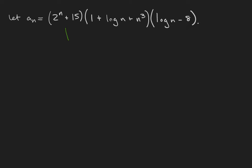The highest order term of the first factor is 2 to the n. The highest order term of the second factor is n cubed. Don't get distracted by the fact there's a 1 in front. It's the highest order term, not the first term. And the highest order term of the third factor is log n. So an is big O of these three functions multiplied together: 2 to the n times n cubed times log n.